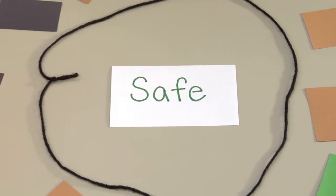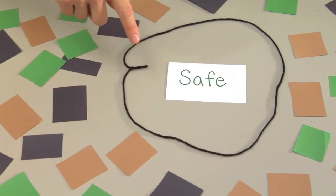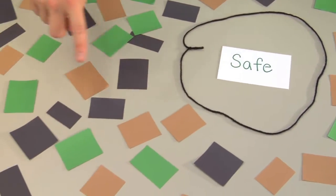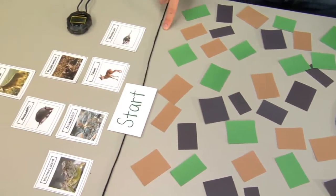In advance, choose a large outdoor area or space as a safe base, modeled here using a loop of yarn. Distribute the food in the play area outside the base and establish a starting line.